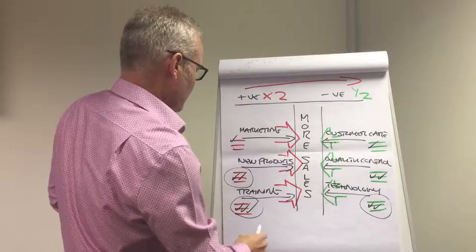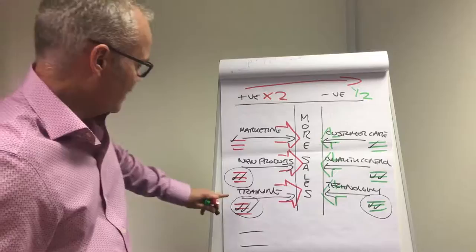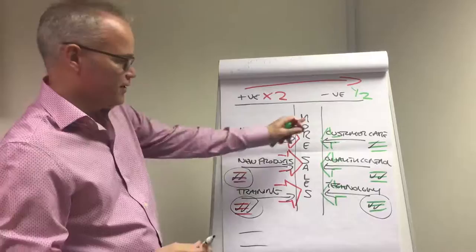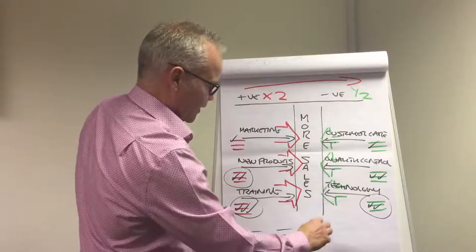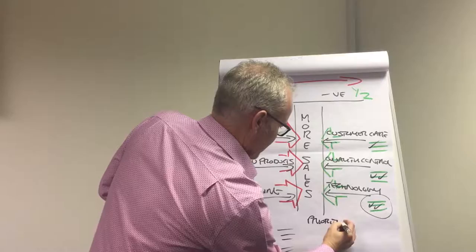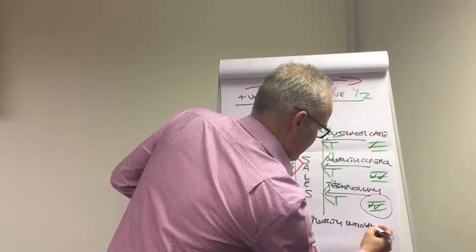So what we now have is the start of a one page plan, where we can list out the activities we're going to do, objective strategy and tactics. The objective is to increase sales, these are the strategies, new products, training, and technology, and the tactics are the individual things that you're going to do under each of these, and then you're going to have a priority, who, and when.